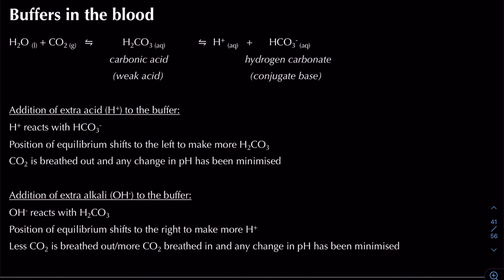We need to explain how buffers actually work. If we add some acid — some H+ — to our buffer solution (which is blood in this case), the H+ reacts with the conjugate base, hydrogen carbonate, shifting the equilibrium to the left, producing more carbonic acid. More carbon dioxide is breathed out, and so any change in pH has been minimized.